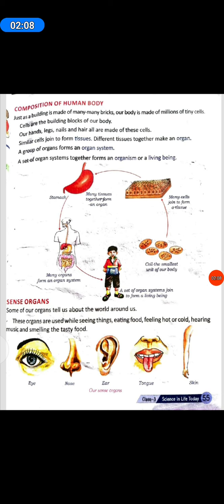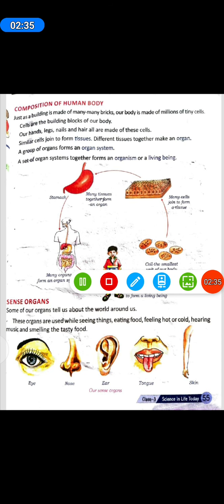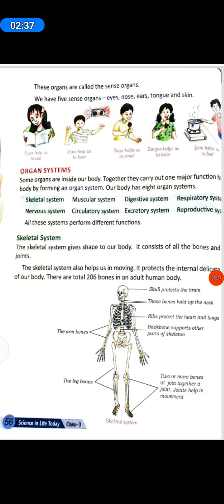Sense Organs. Some of our organs tell us about the world around us. These organs are used while seeing things, eating food, feeling hot or cold, hearing music and smelling tasty food. Eye, nose, ear, tongue, and skin are our sense organs. These organs are called the sense organs. We have five sense organs: eyes, nose, ears, tongue and skin.